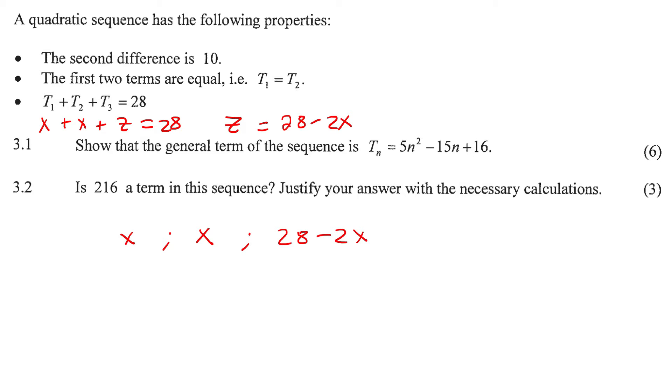Now I can go down to the first difference, that would just be zero. Then to work out your difference you always take this one minus this one, that would give you 28 minus 3x because it would be 28 minus 2x minus x. If you go to the second difference, they told us that is 10.